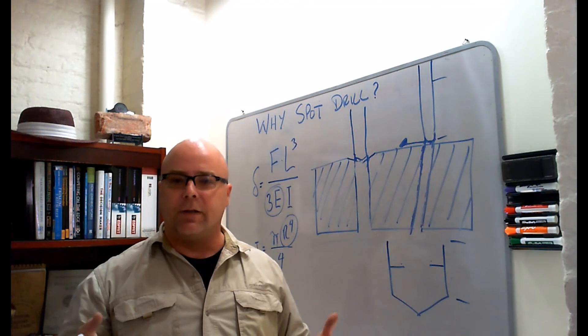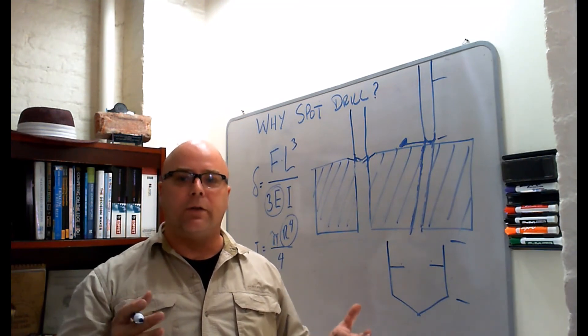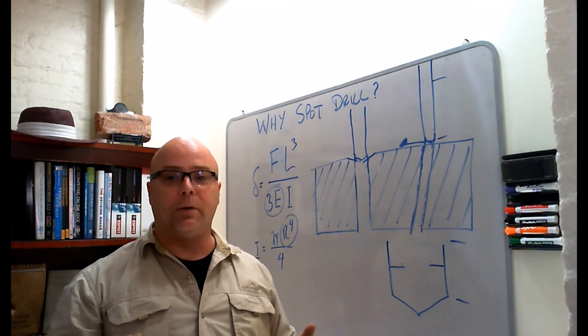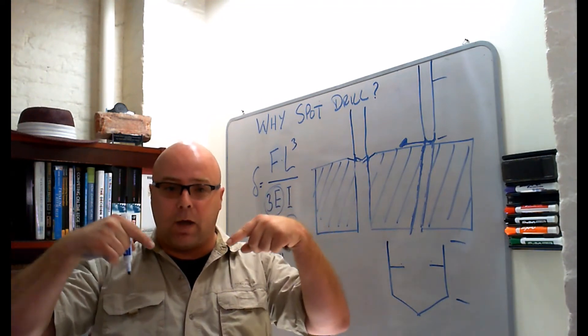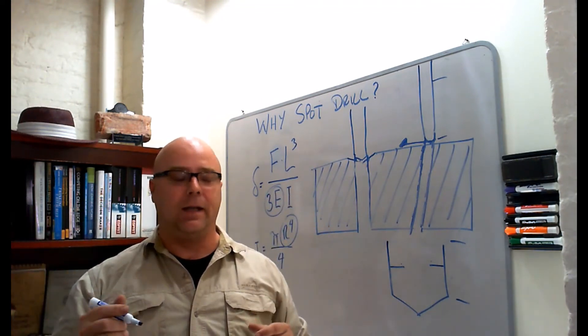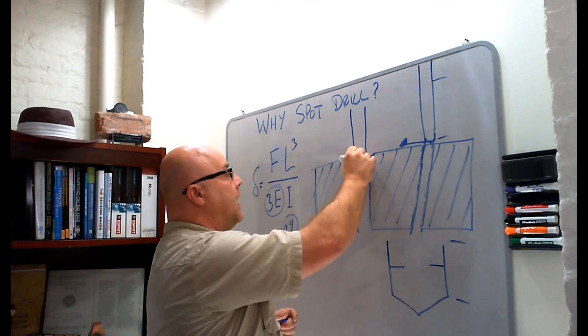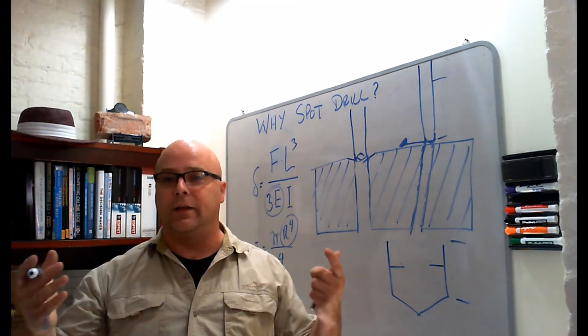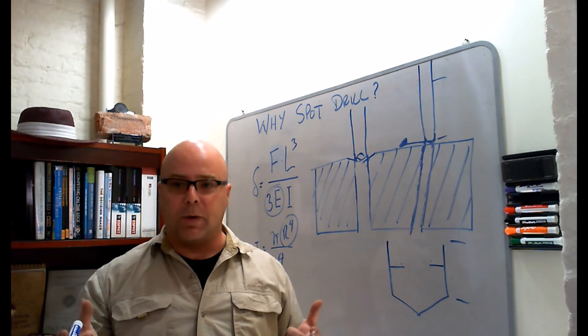As you get experience doing this, you'll get a feeling for whether or not you need to do a spot drilling operation. There's some other tips. For example, if you use a carbide drill, you have to use a spot drill with the exact same tip angle here. This angle in here for the spot drill and the carbide drill should be exactly the same or you shouldn't spot drill.